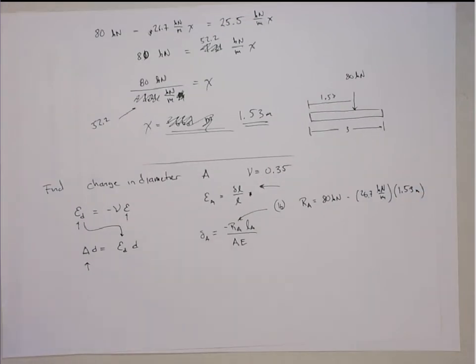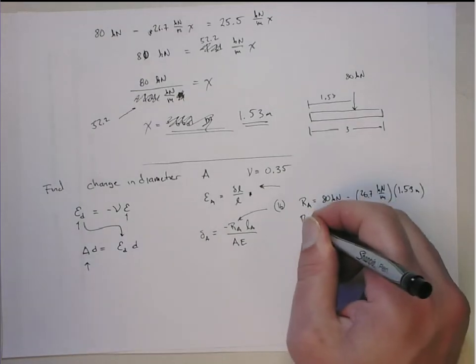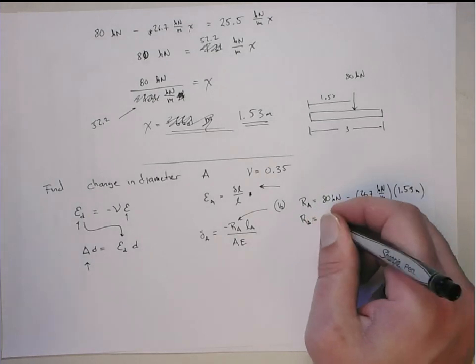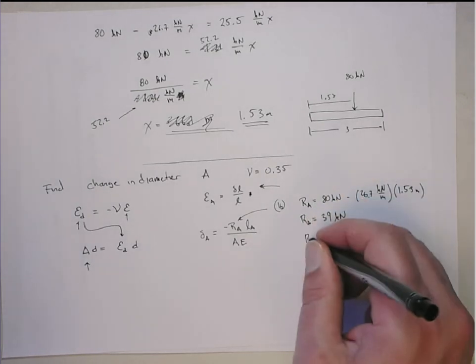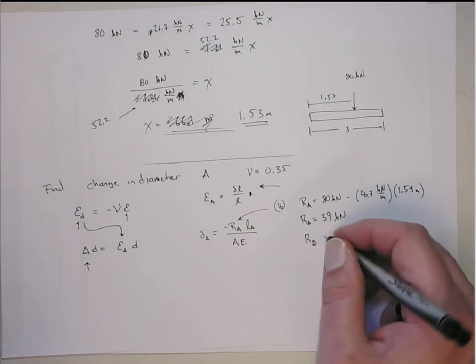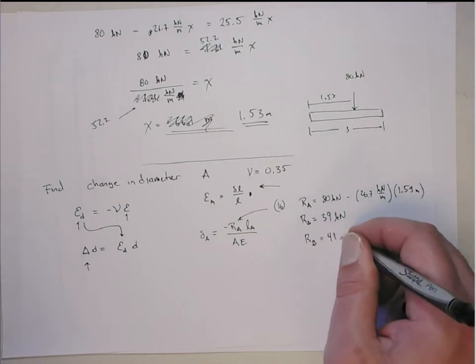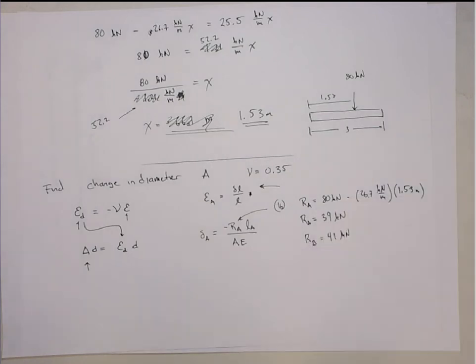This will give me RA equal to 39 kilonewtons. Then obviously RB from sum of the forces in the Y is going to be 41 kilonewtons, since they both have to add up to 80.